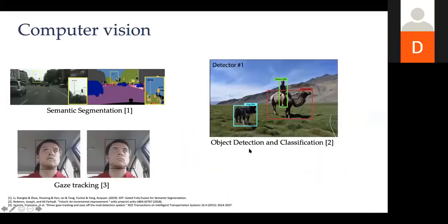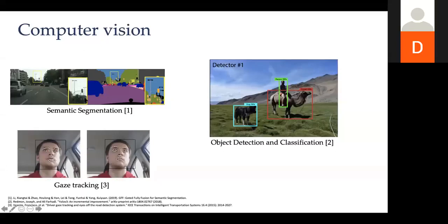Computer vision is basically taking an image formed by some sensor and trying to gain understanding about the scene. One commonly used algorithm, especially in autonomous driving, is semantic segmentation — you take a scene and try to understand what's in it: which portions of the road are unoccupied, where are cars and people, where are traffic signs, so you can make decisions based on that.